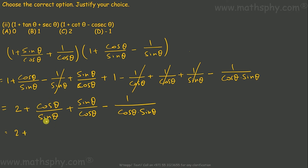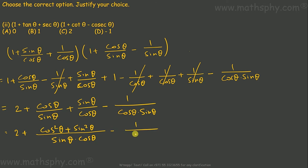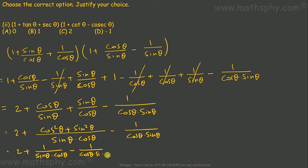Let's add cosθ over sinθ and sinθ over cosθ together using LCM. This gives cos²θ plus sin²θ all over sinθ·cosθ. Since cos²θ plus sin²θ equals 1, this simplifies to 1 over sinθ·cosθ. So we have 2 plus 1 over sinθ·cosθ minus 1 over cosθ·sinθ.